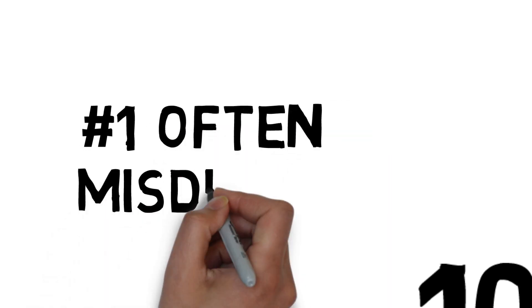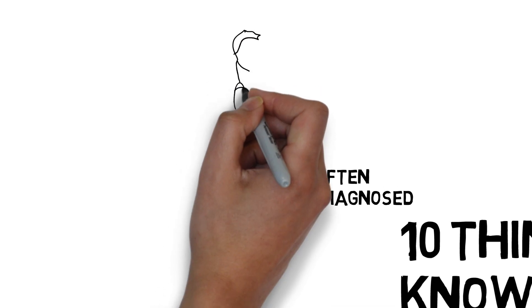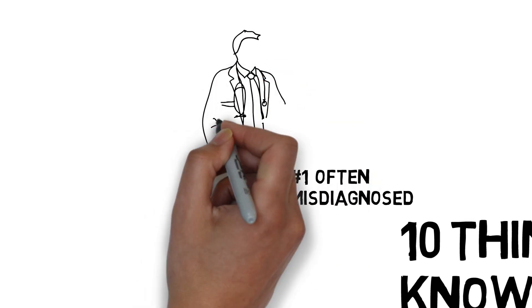Number 1. Celiac disease is often misdiagnosed. Over 80% of Americans who suffer with celiac disease are undiagnosed and many of them have been misdiagnosed with other illnesses.